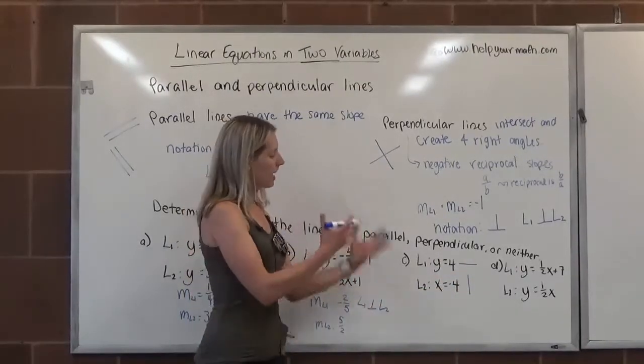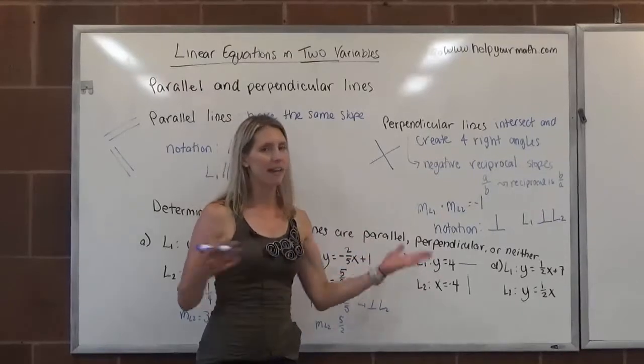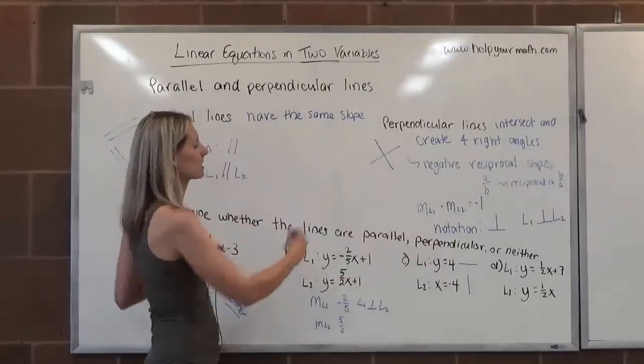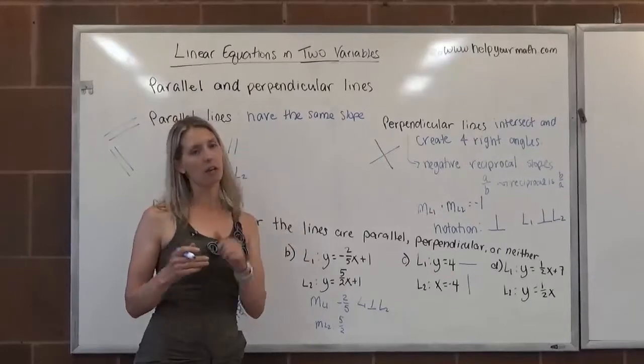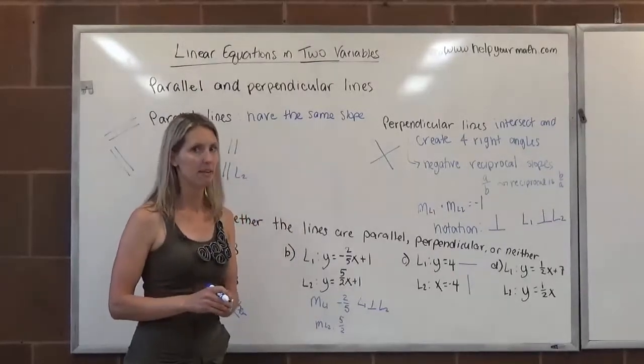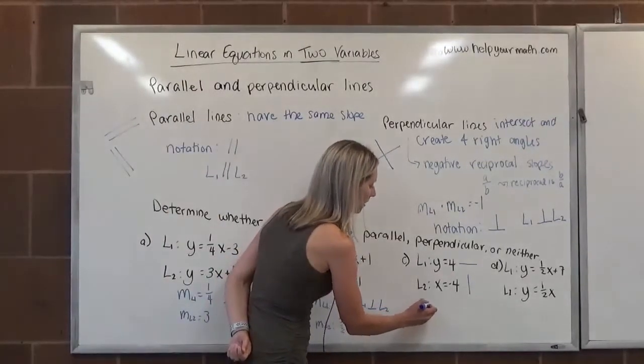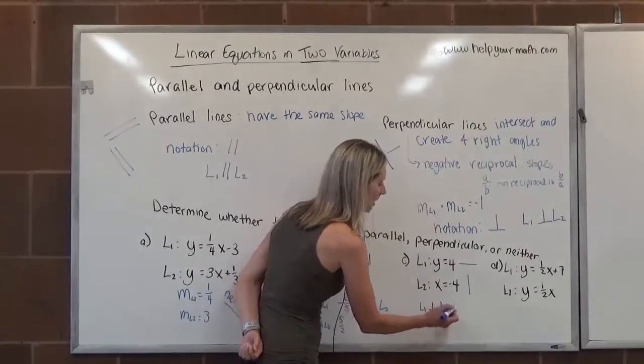And while we have a slope here of zero and undefined, it kind of doesn't match any of this. But in fact, any horizontal line is perpendicular to any vertical line. So these two lines are perpendicular. L1 is perpendicular to L2.